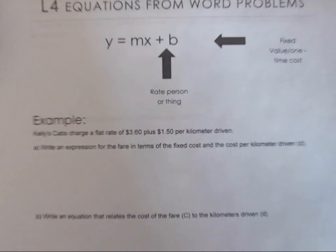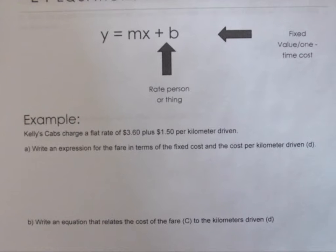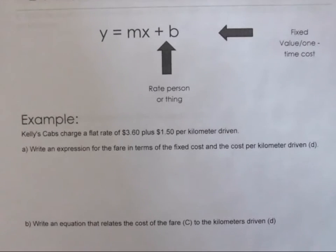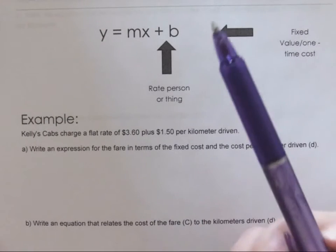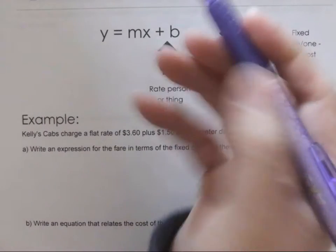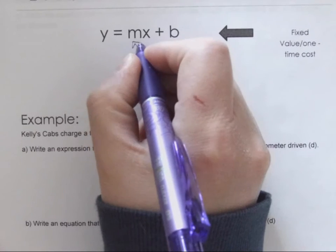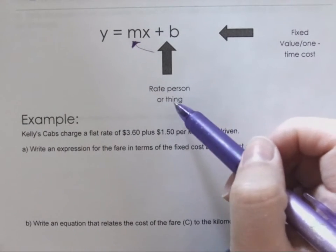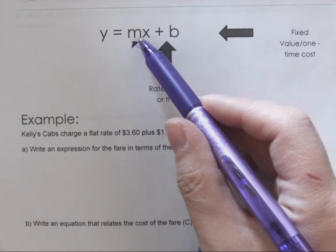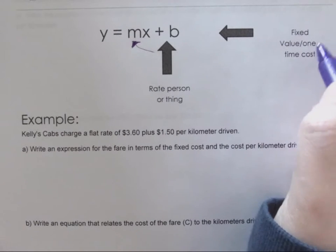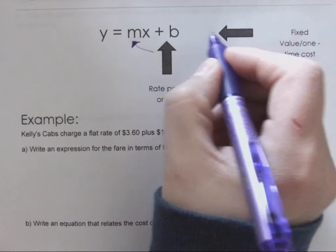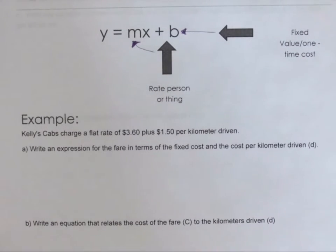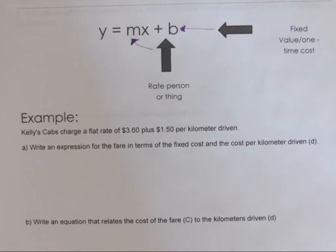Just going to zoom in here for a second. All right, so hopefully yours will be fixed. We're still going to be using that same form. My notes shifted, okay let's try again. So the rate per person or thing is your m, and your b is the fixed value or the one-time cost. That should be pointing at the b.